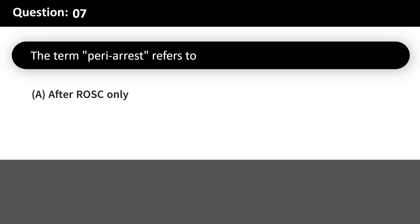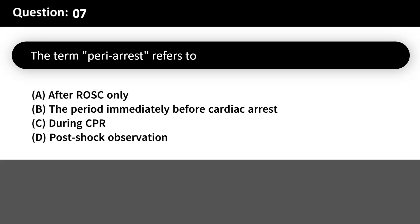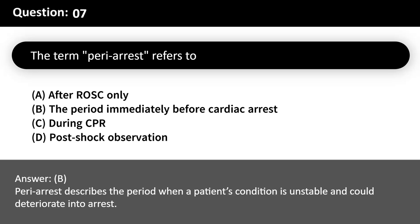The term peri-arrest refers to: A. After ROSC only. B. The period immediately before cardiac arrest. C. During CPR. D. Post-shock observation. Answer: B. Peri-arrest describes the period when a patient's condition is unstable and could deteriorate into arrest.